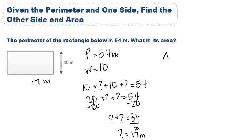Now that we know that, we can very easily find our area by multiplying our length times our width, or 17 times 10, which gives us 170 meters squared.